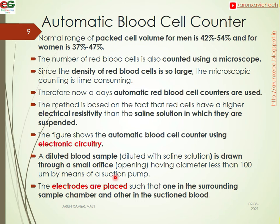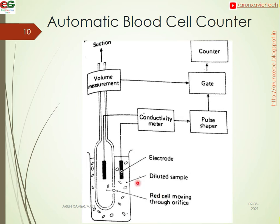The electrodes are placed such that one is in the surrounding sample chamber and the other is in the suction region. Two electrodes are used in the automatic blood cell counter.